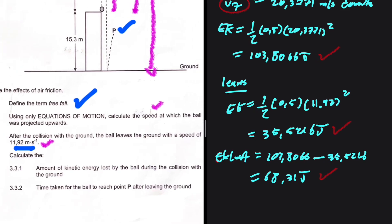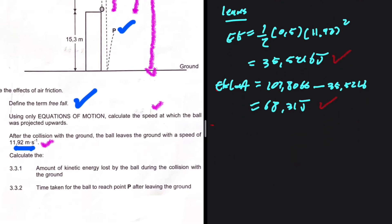It's quite an interesting question — the first time I've seen a question like this, but that doesn't mean you should get it wrong because it's quite basic. You just needed to realize you can find the kinetic energy as the ball strikes the ground, the kinetic energy as it leaves the ground, and the difference is the kinetic energy lost during contact. 3.3.2: Time taken for the ball to reach point P after leaving the ground.